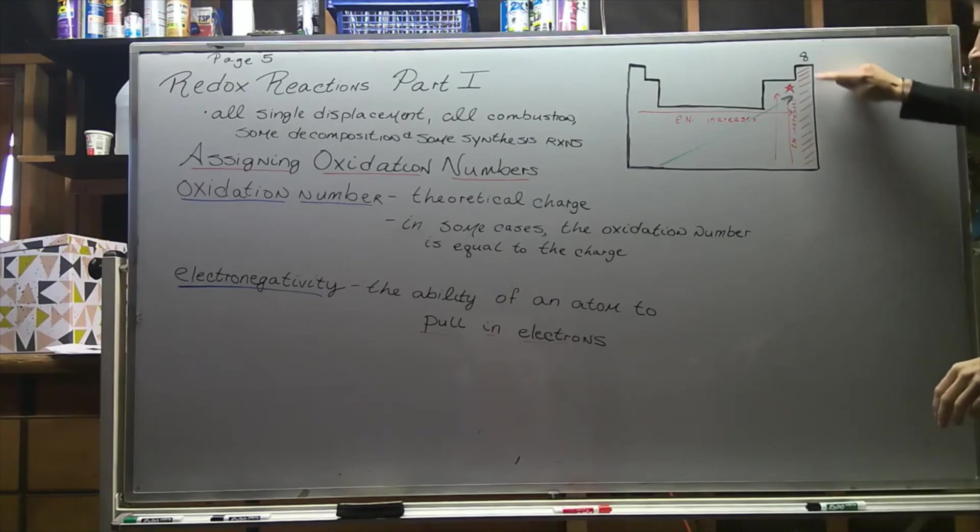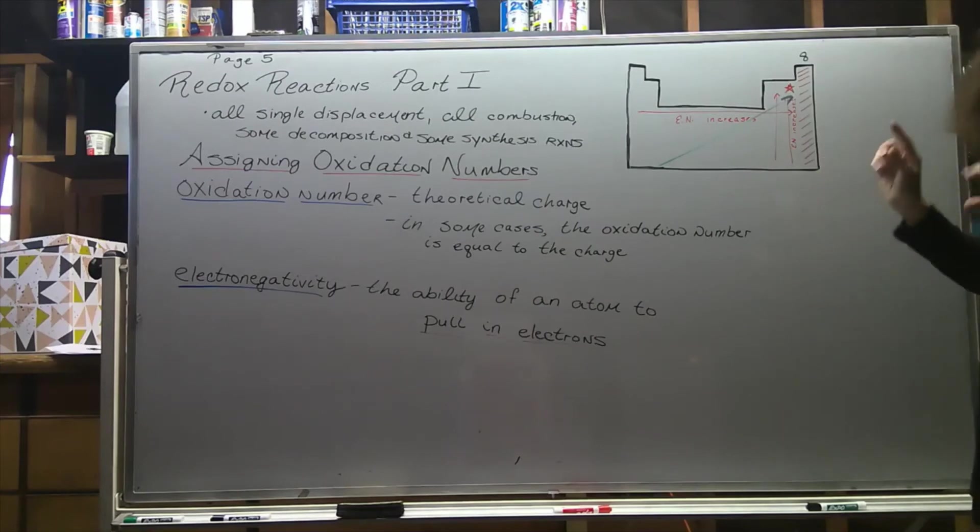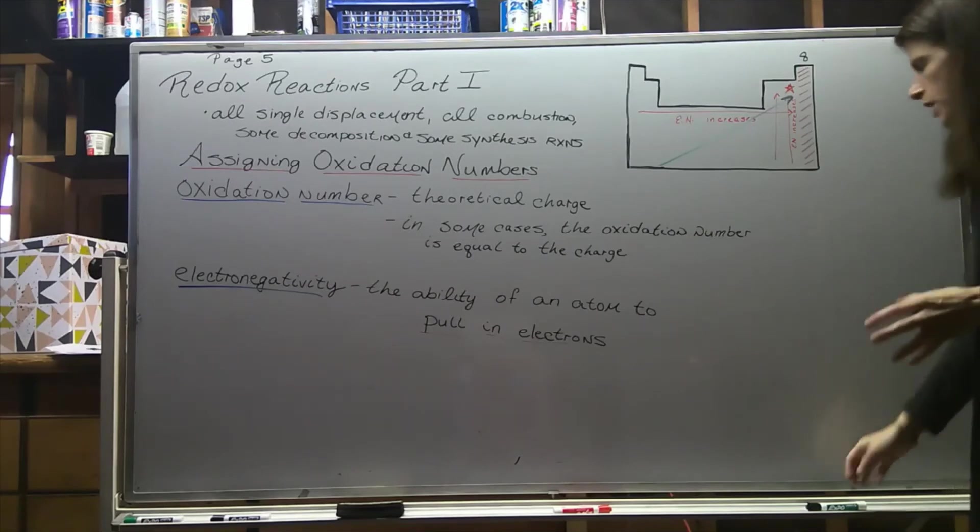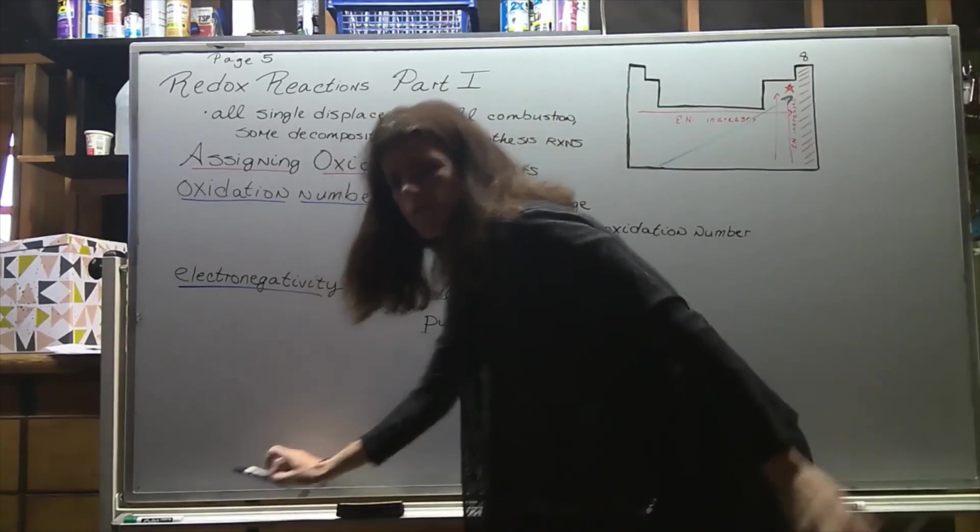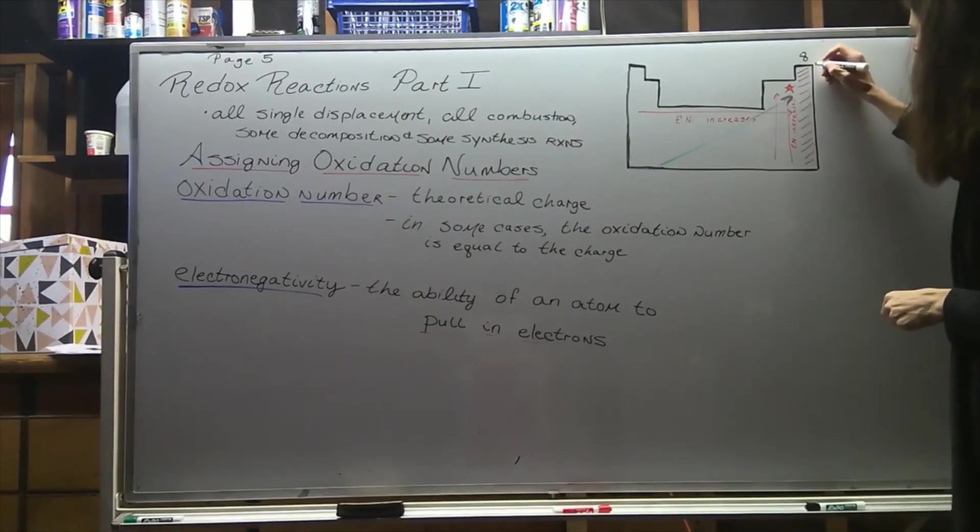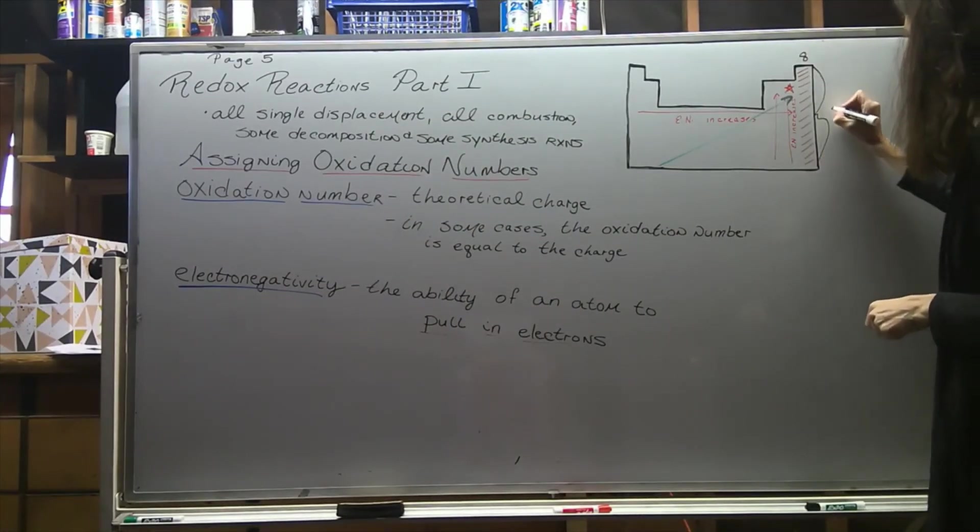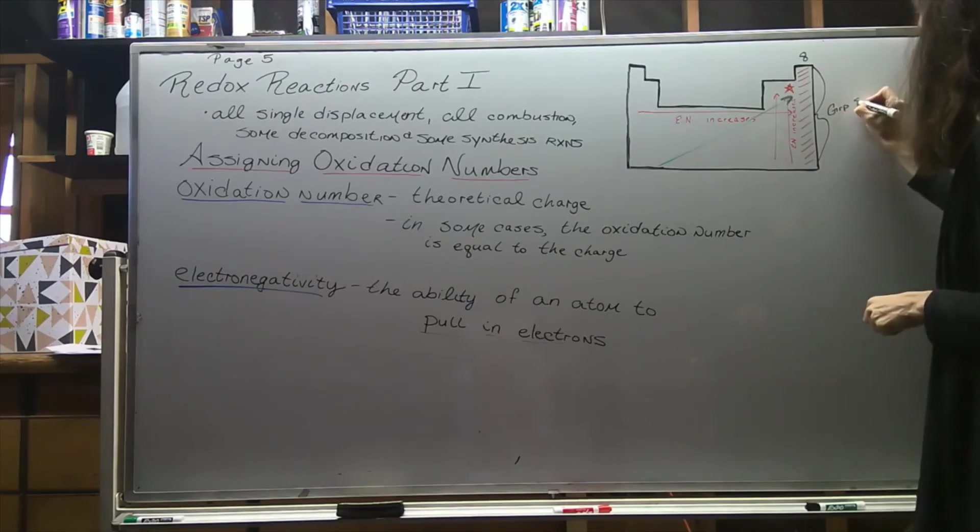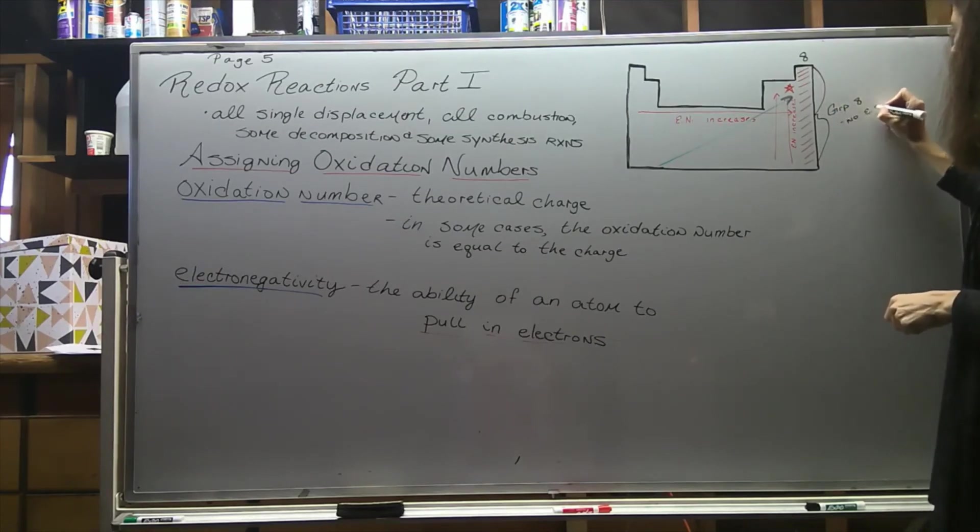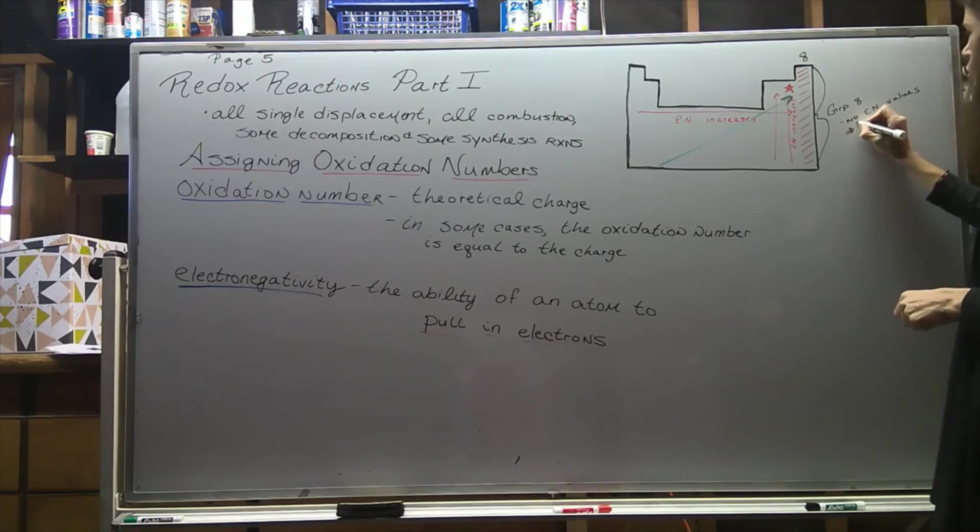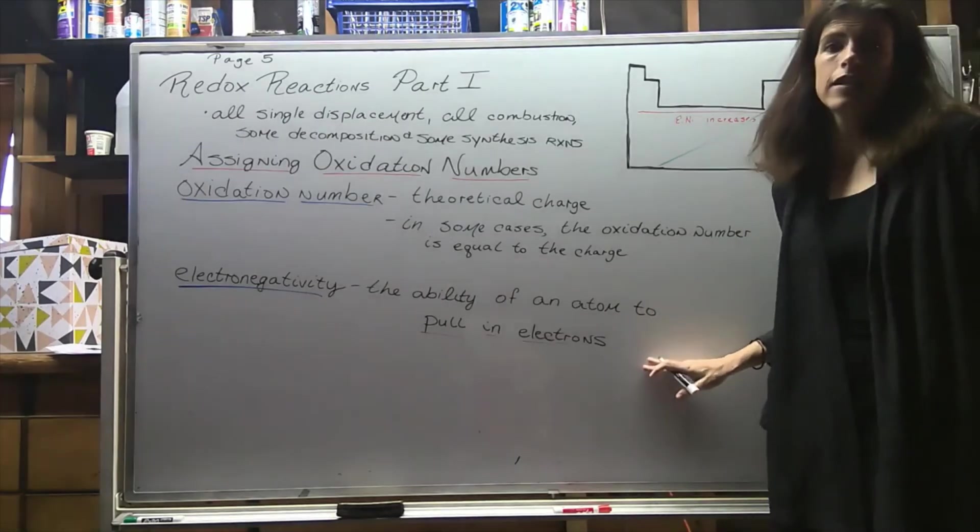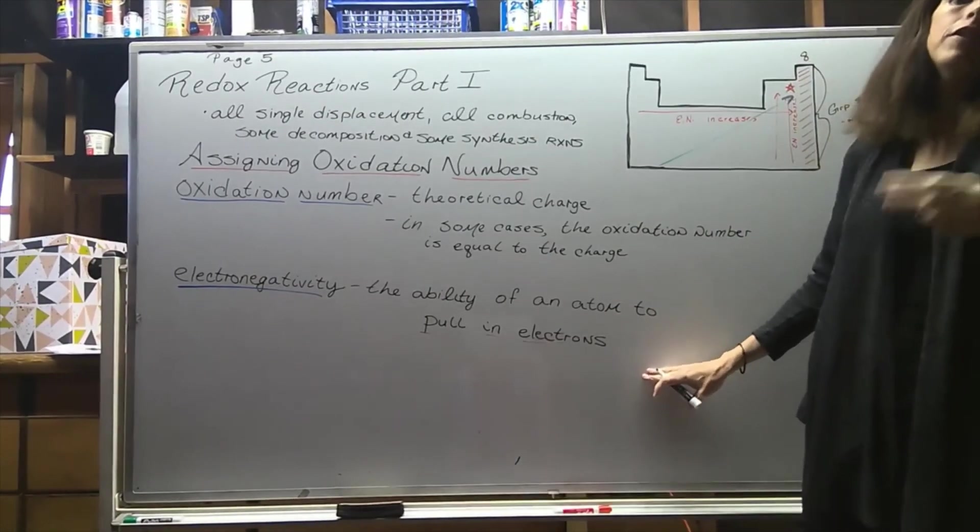I have group eight marked out here. There are a couple exceptions, but for the most part we say that group eight doesn't have electronegativity values. Why might that be? Think about what's going on with group eight. Group eight already has that full shell, so there's no need to pull in electrons. It has a full shell, so it doesn't have the ability or need to pull in electrons.